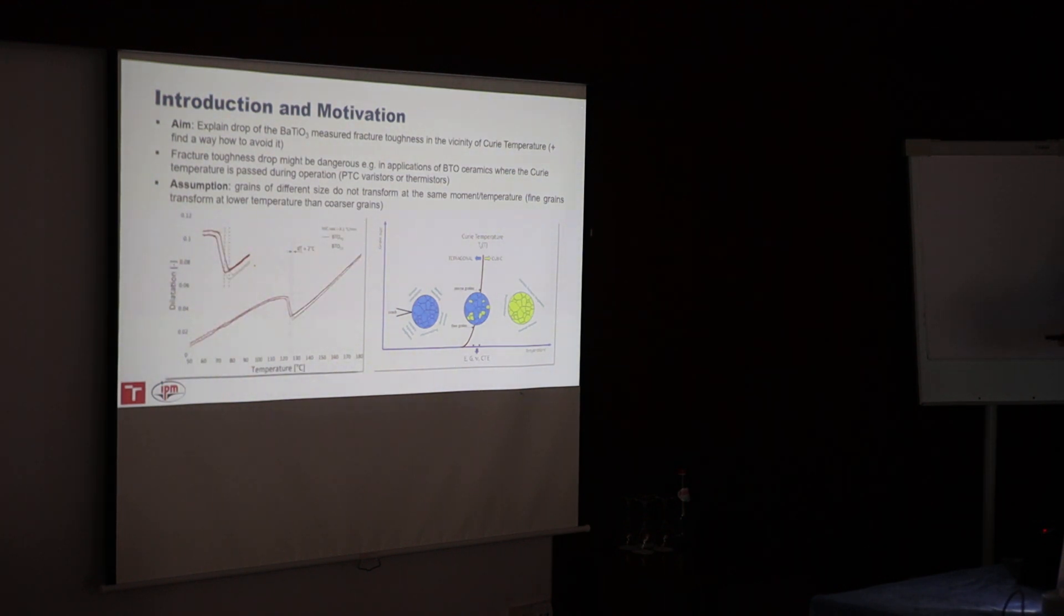Here we see the dilatometry curves of these barium titanate materials. We see that when we're passing the Curie temperature, there is a sudden change related to transformation from tetragonal to cubic lattice.